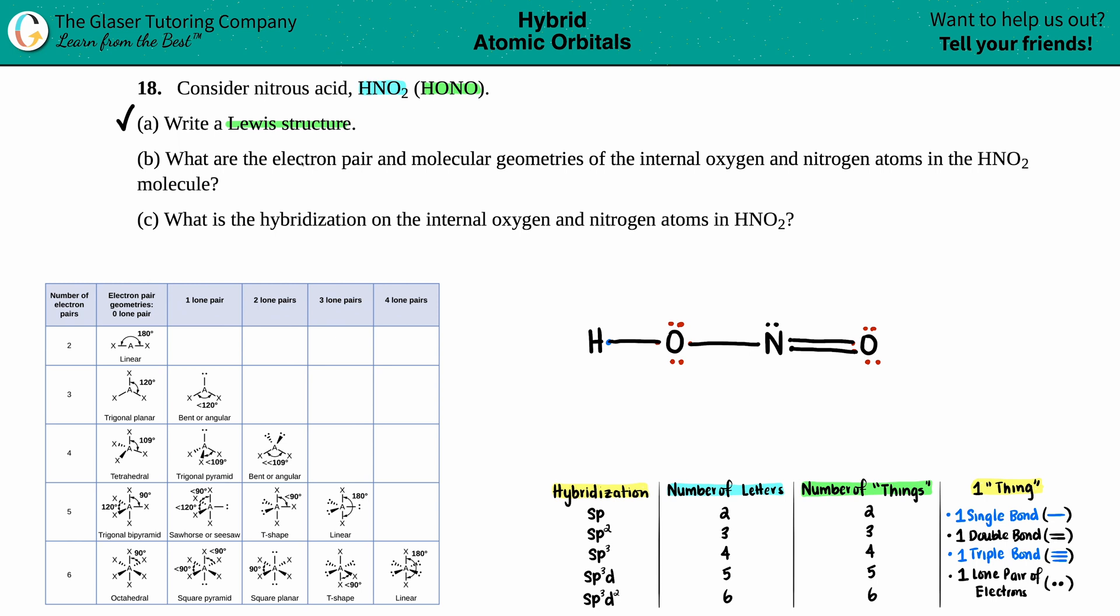Letter B says, what are the electron pair and molecular geometries of the internal oxygen and the nitrogen atoms in the HNO2 molecule? Okay. So we're looking for electron pair and molecular geometries of the internal oxygen.